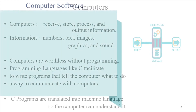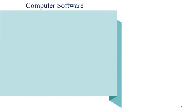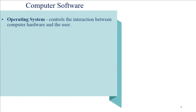C programs are translated into machine language so the computer can understand them. With this background, let us define what computer software means and what the types are. We have two types of computer software: one is known as system software, under which the most important is the operating system, and the other is application software.